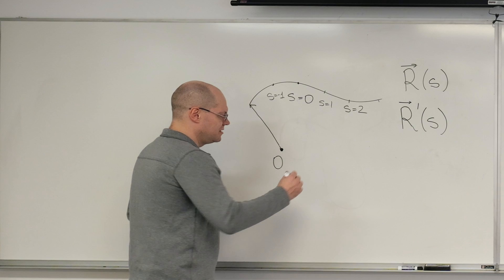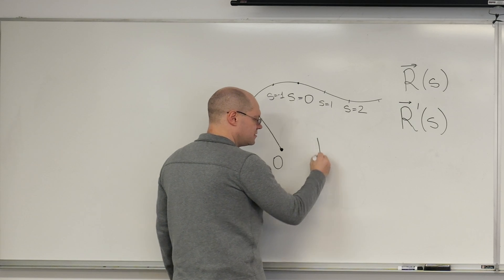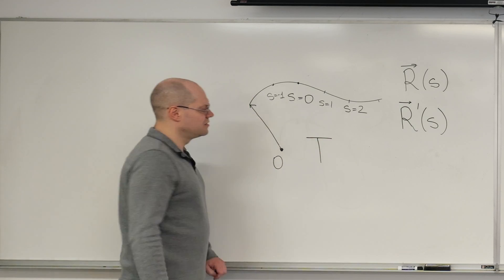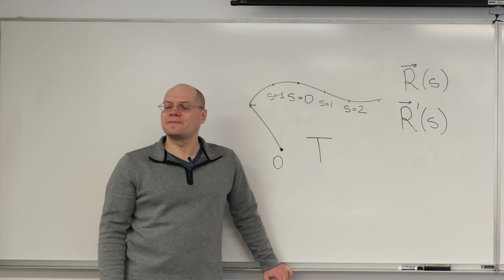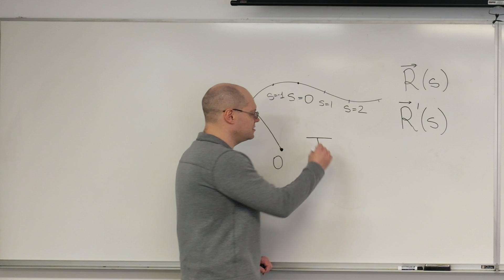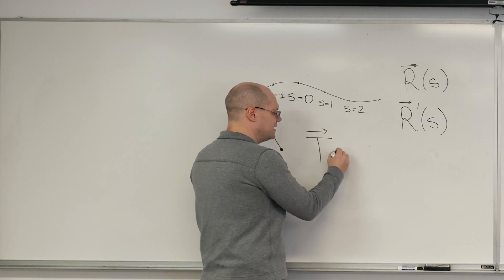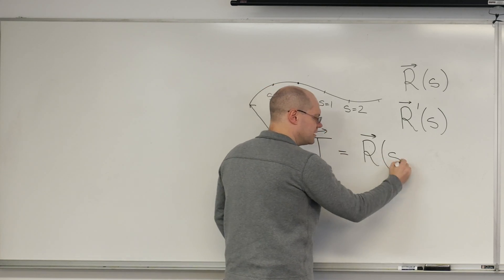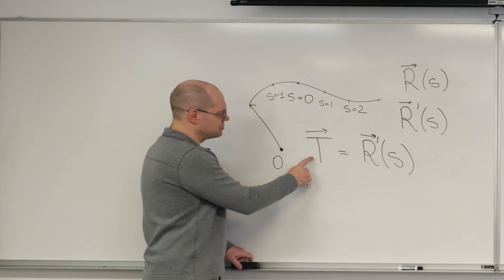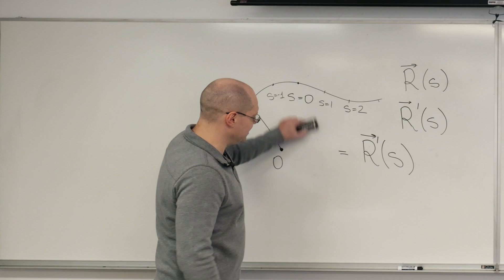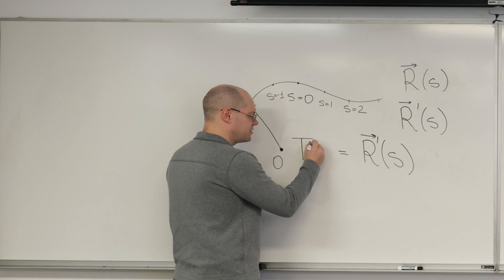So now all that's left is to define this unit tangent. It's denoted by capital T. We'll spend more time with it on Thursday. And it is defined, and because we're going to be taking further derivatives of it, I'll write that it is also a function of arc length.